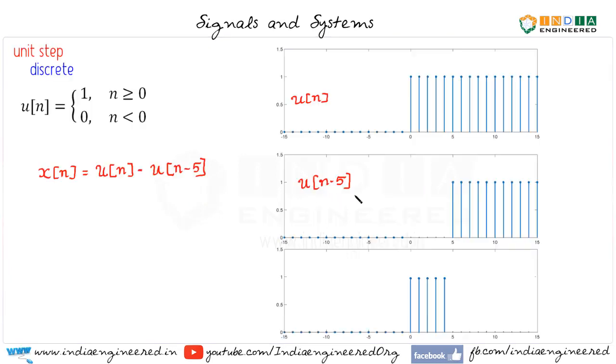When subtracting u(n-5) from u(n) we will get x(n). One important point to note here is that x(n) is equal to 1 for 0 less than or equal to n less than or equal to 4.